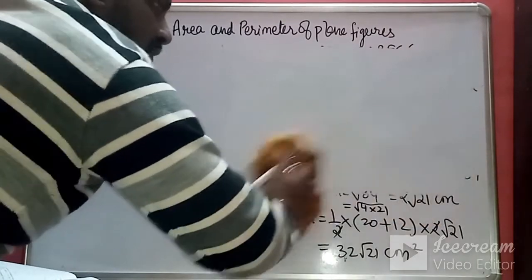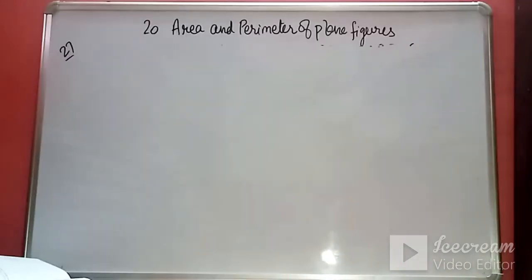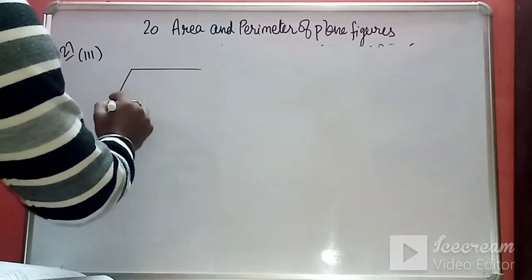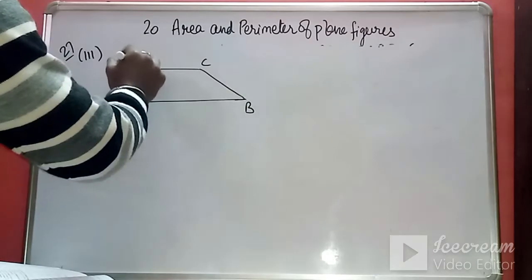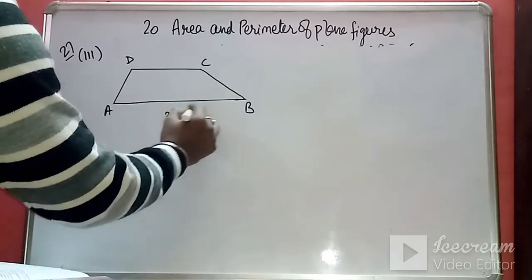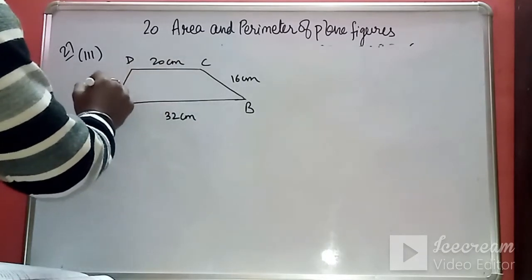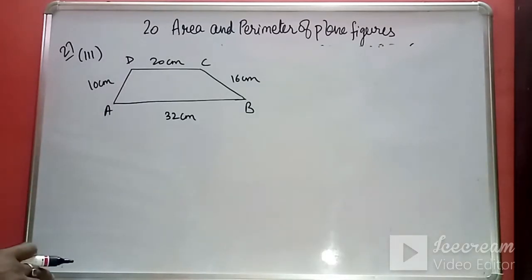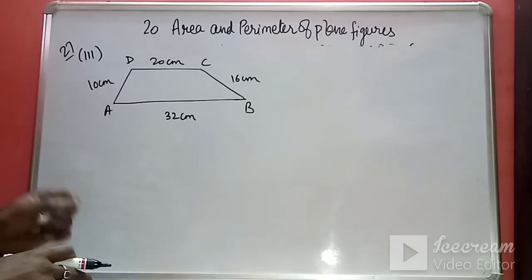You can distribute the trapezium into a right-angle triangle and a rectangle. Now we see a different type of case where all four sides are unequal. Let's draw the figure: trapezium ABCD with sides 32 cm, 16 cm, 20 cm, and 10 cm. For finding the area of this type of trapezium, we will distribute it into a parallelogram and a triangle.